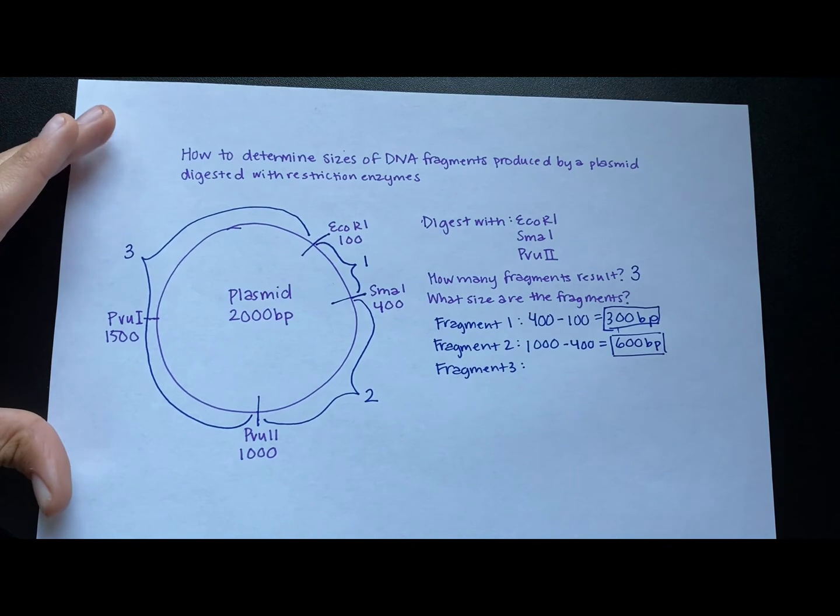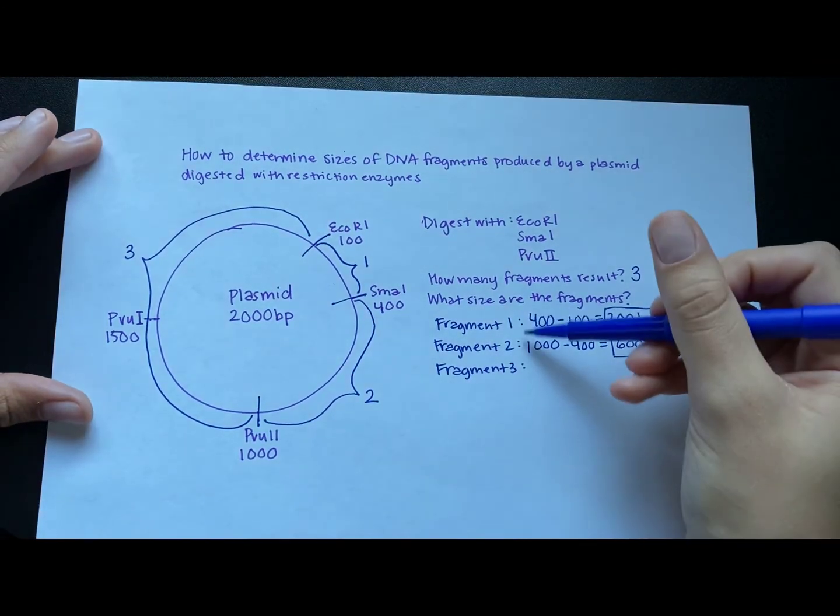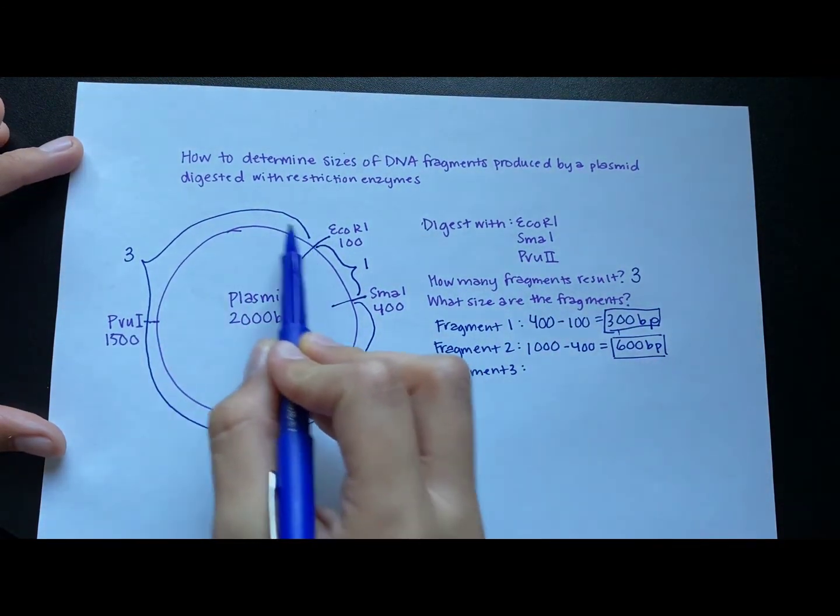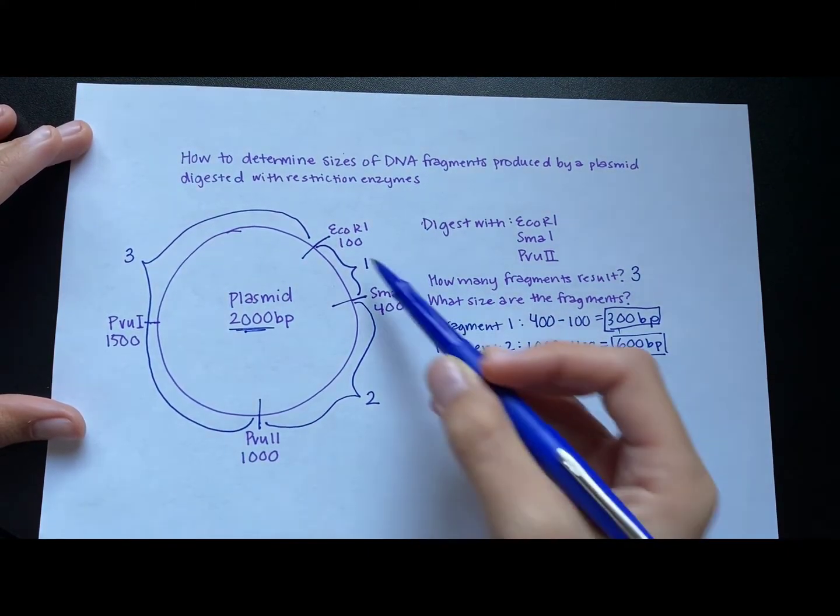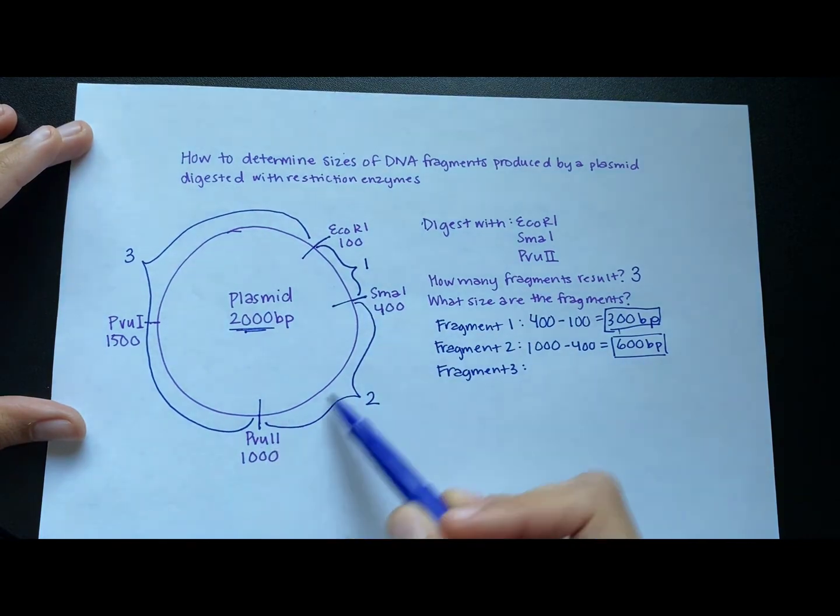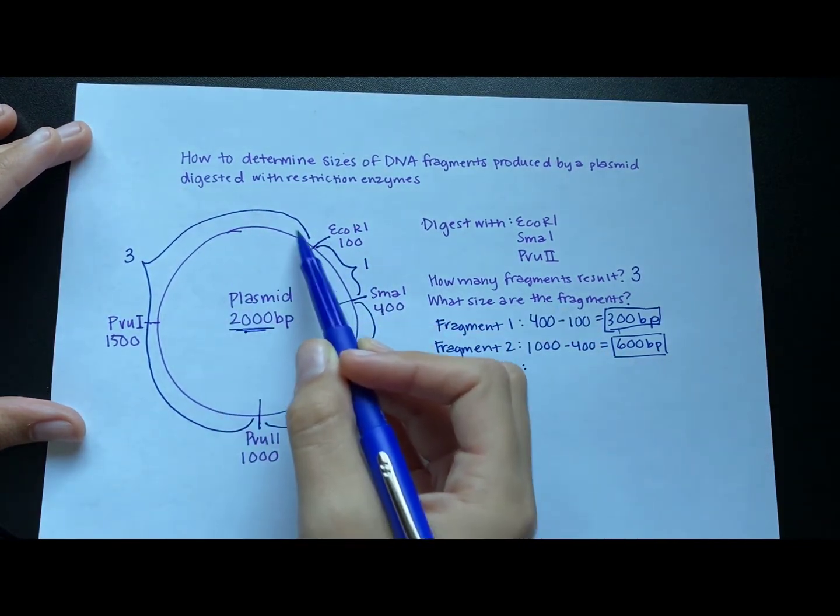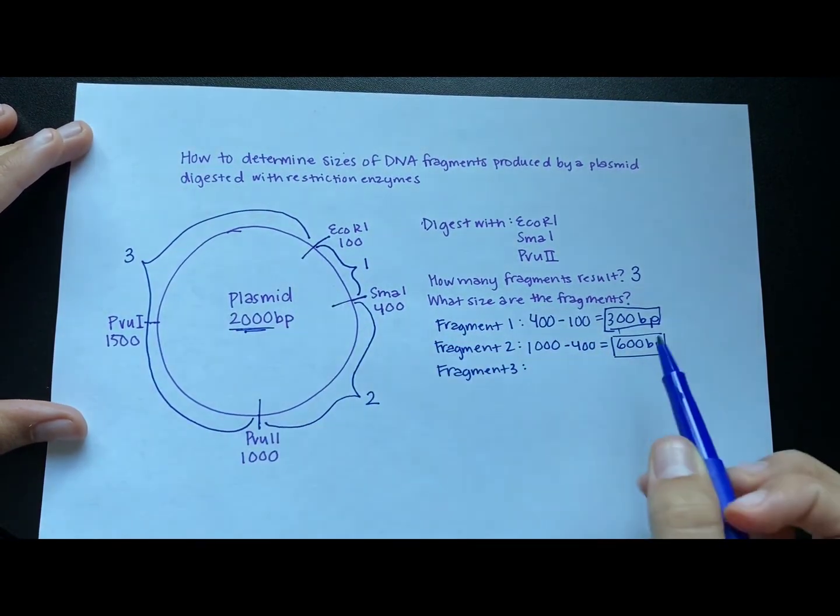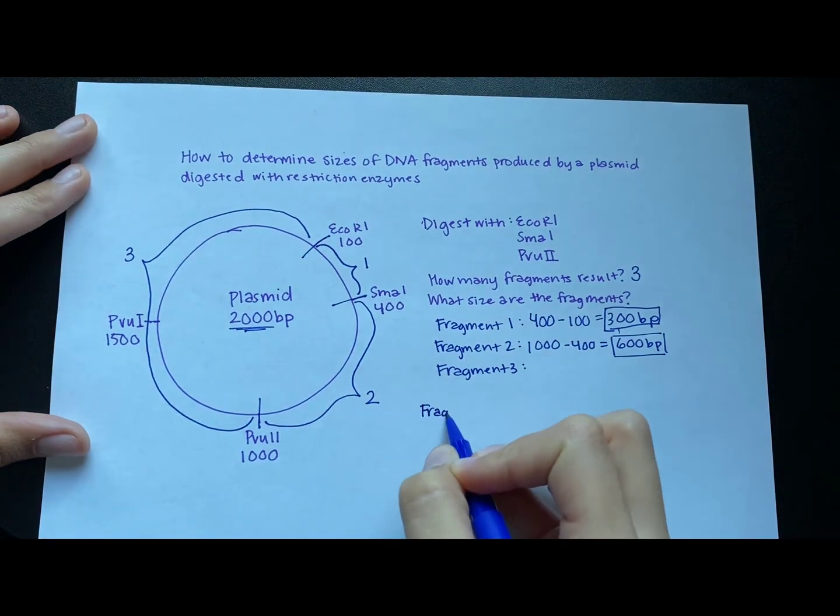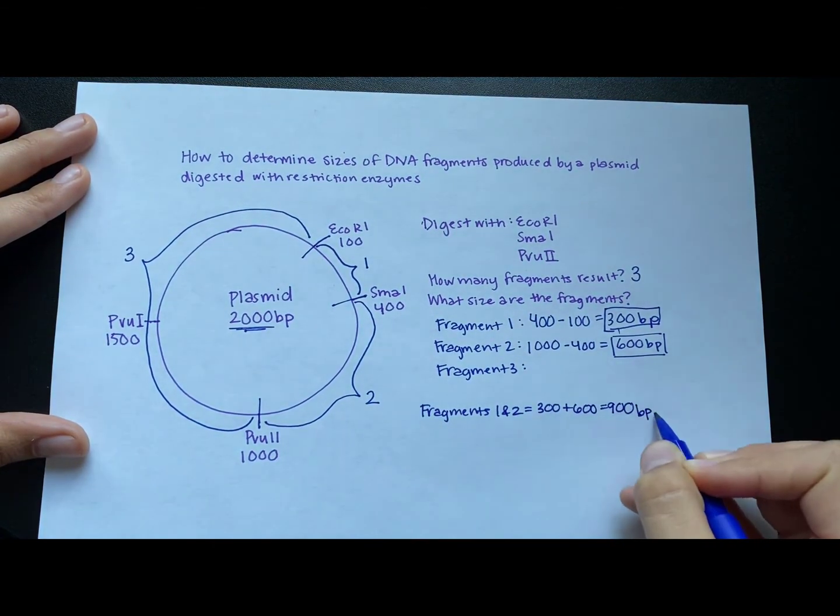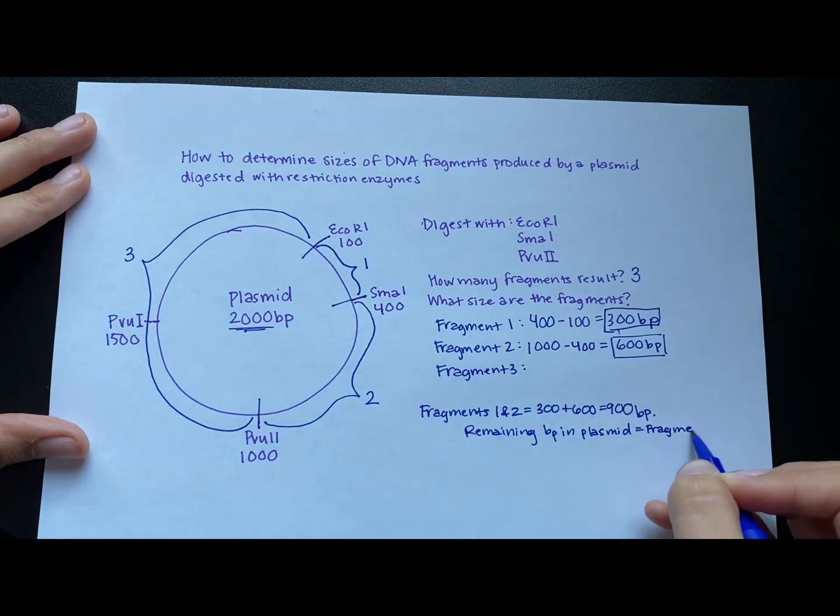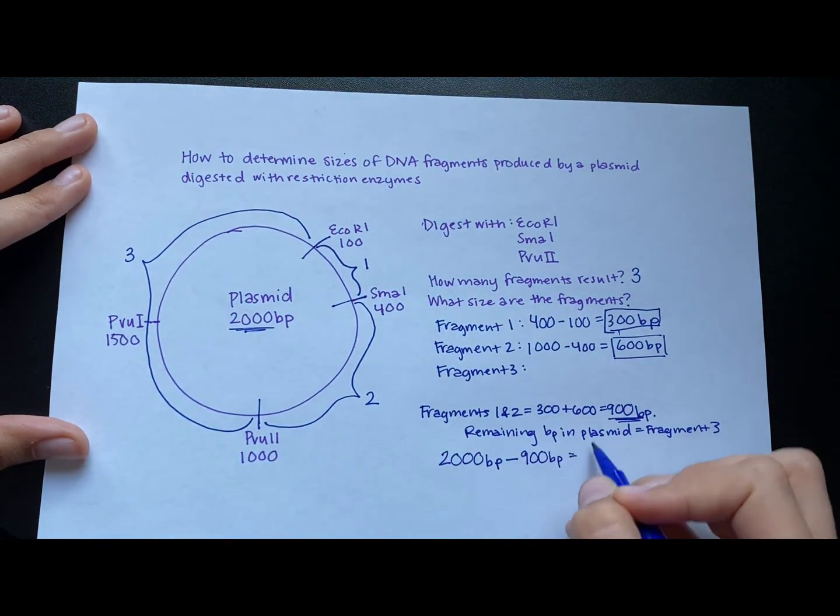So now we have the size of these two fragments. And I still need to find the size of the biggest fragment, the really big fragment, fragment three. So if we add up the sizes of fragments one and two, that would give us both one and two. And then the remaining base pairs in the plasmid, that's fragment three. So fragments one and two are 300 and 600, giving us 900 base pairs total. So the remaining base pairs in the plasmid will give you fragment three. So fragment three is 1,100 base pairs.